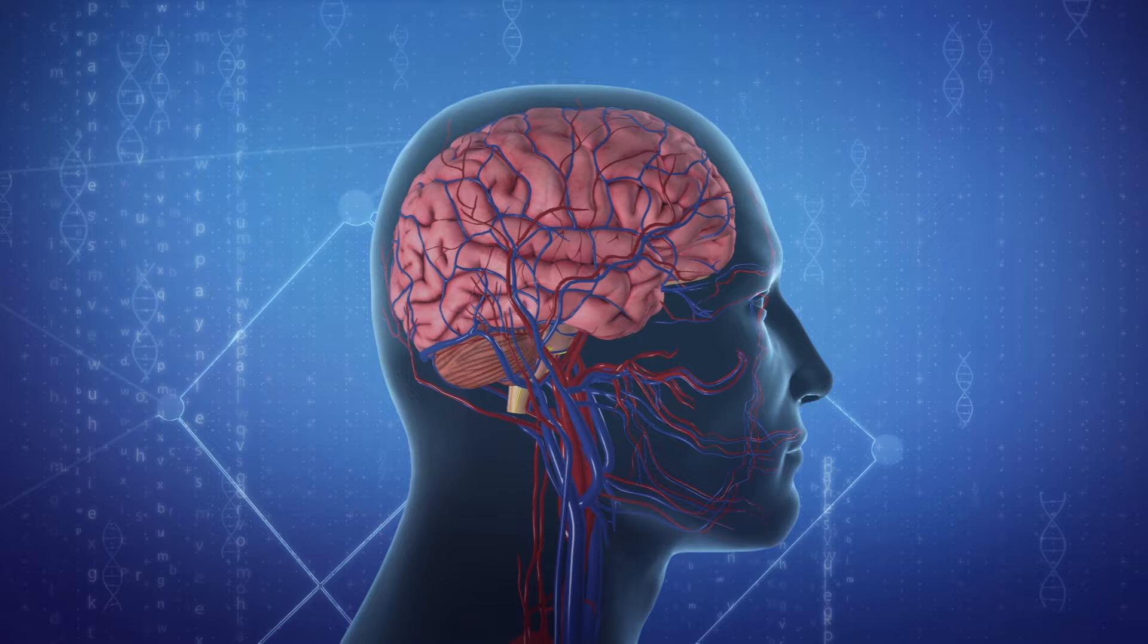Silent strokes occur when there has been an interruption of blood flow in an area of the brain that is not vital. However, as they accumulate, they can damage brain function.